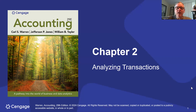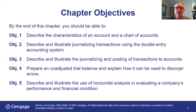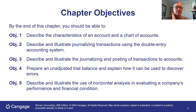Welcome back to financial accounting. We're going to begin Chapter 2, which is called 'Analyzing Transactions.' Like any chapter, we have learning objectives — five of them. The first is to describe the characteristics of an account and a chart of accounts. In chapter one we recorded things that affected the accounting equation in columns.